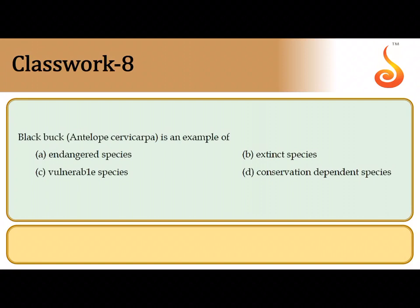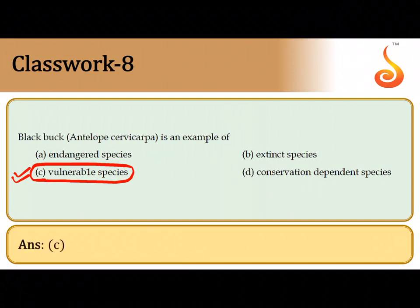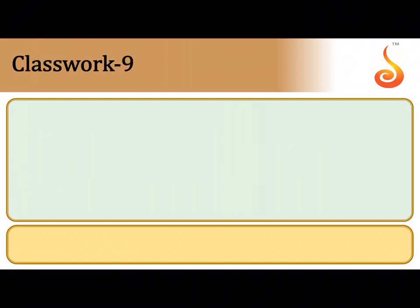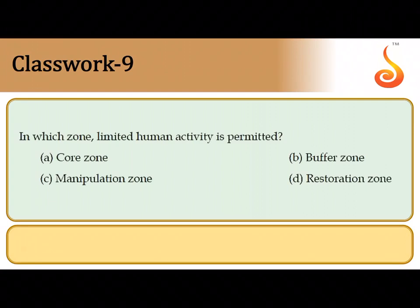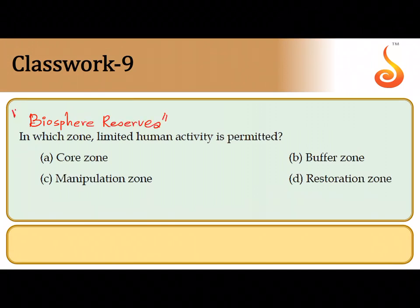Black buck — Antilope cervicapra — is identified as a vulnerable species. Vulnerable means it does not face an immediate threat of extinction, but if proper conservation is not provided, it may move into the endangered category. So black buck is option C, vulnerable species. The ninth question asks in which zone limited human activity is permitted in biosphere reserves. Biosphere reserves have three distinct zones: core zone, buffer zone, and manipulation zone.